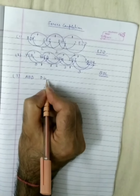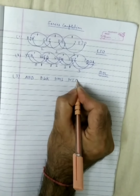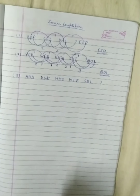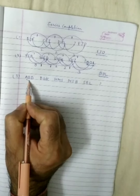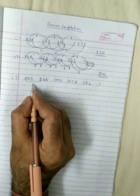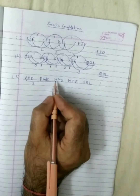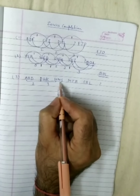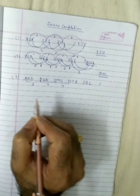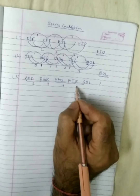Looking at the first letter: A to D — two letters gap. D to H — three letters gap. H to M — four letters gap. M to S — five letters gap. The pattern is increasing: 2, 3, 4, 5. So next will be a six-letter gap. After S: T, U, V, W, X, Y, Z. The first letter of the missing term is Z.